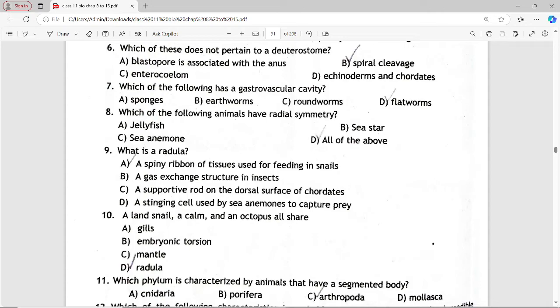Next is: what is a radula? Options are a spiny ribbon of tissues used for feeding in snails, a gas exchange structure in insects, a supportive rod on the dorsal surface of chordates, a stinging cell used by sea animals to capture prey. Answer is option A, a spiny ribbon of tissues used for feeding in snails.